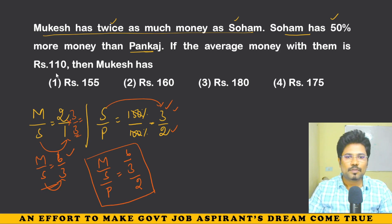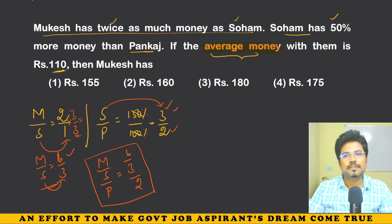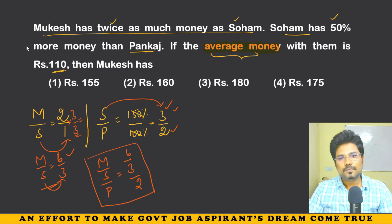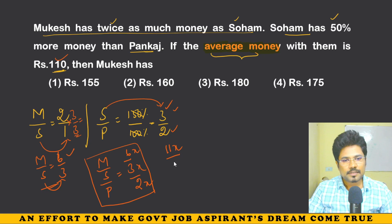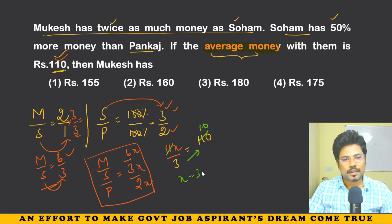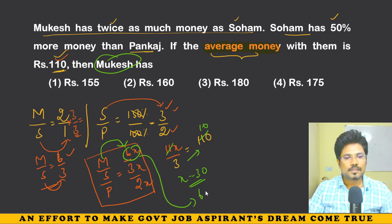The average money with them is 110 — this is the most important part. Let values be 6x, 3x, and 2x. The sum is 6+3+2 = 11, so 11x divided by 3 equals 110. Solving: x = 30. Therefore Mukesh has 6x = 6 × 30 = 180. That is the answer.